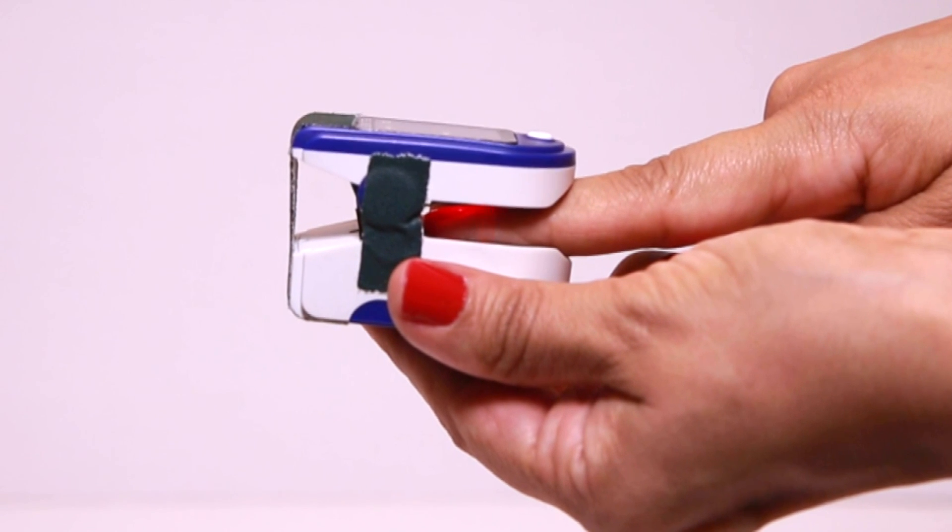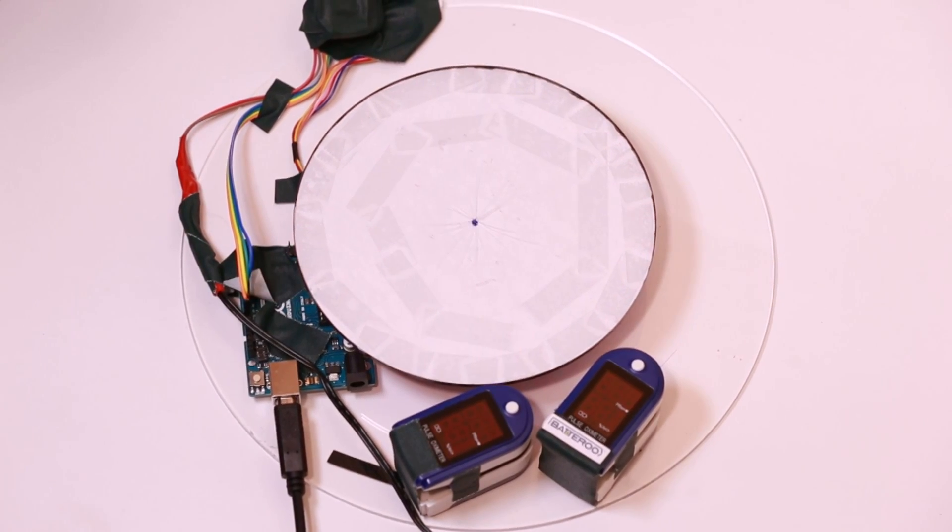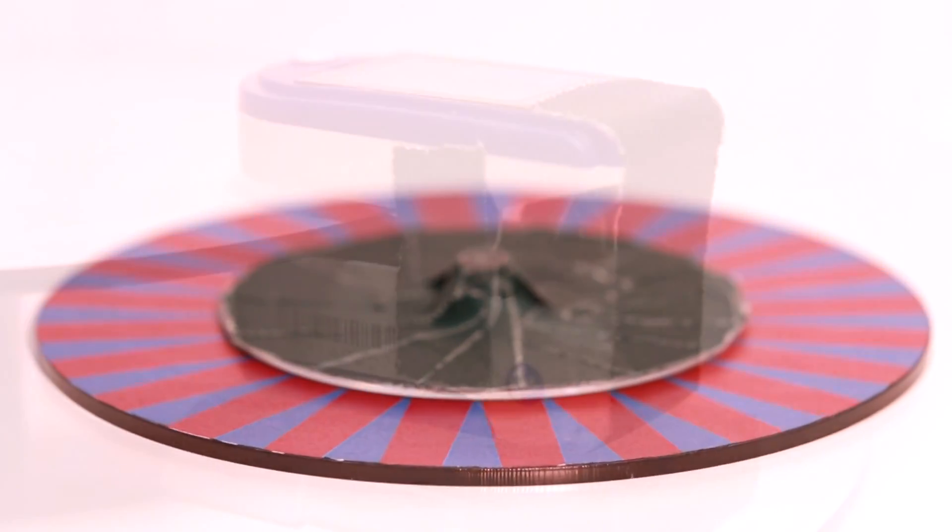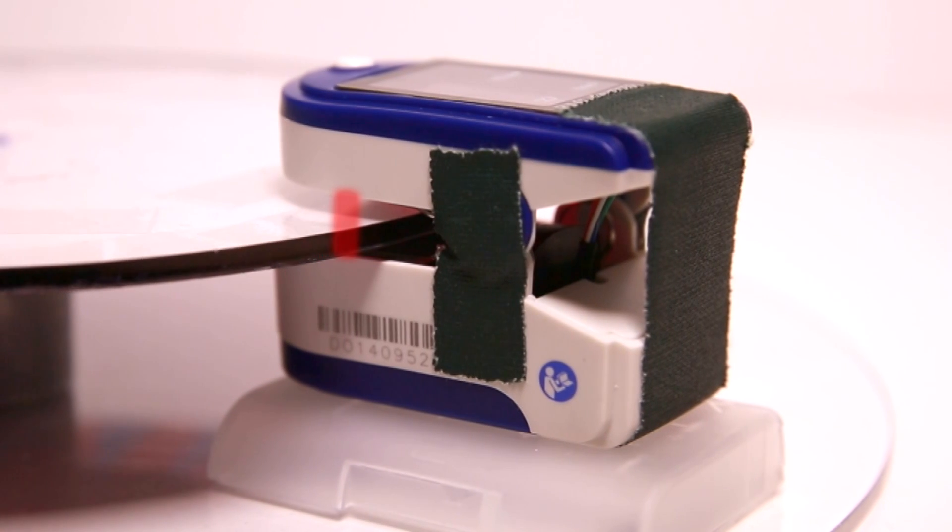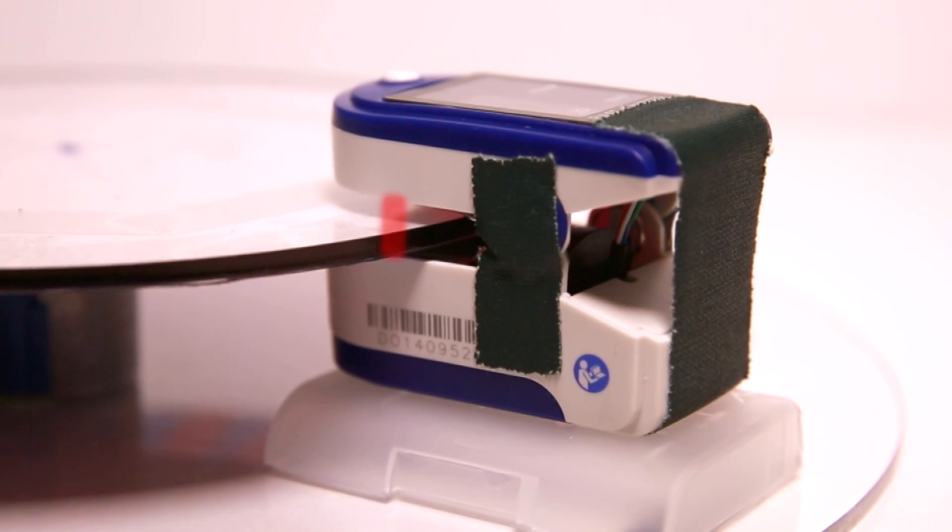It functions by shining a light through the finger to make the measurements. For this experiment, we have devised a spinning device that reflects different light patterns. When read by a pulse oximeter, this setup mimics light patterns similar to those of a human finger.